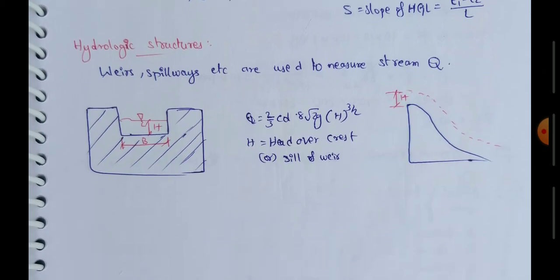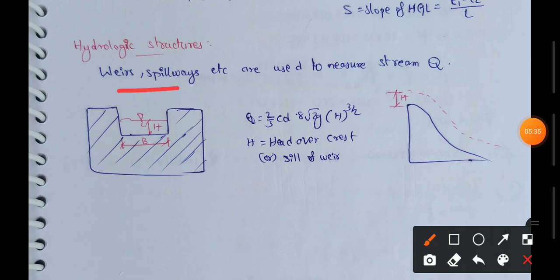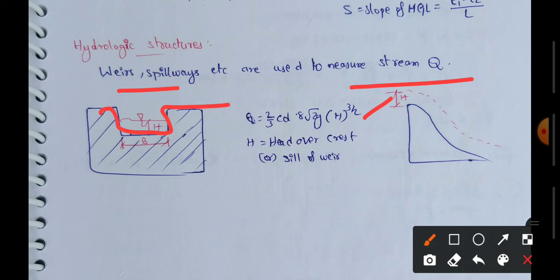Hydraulic structures — such as spillways, weirs, and flumes — are used to find stream discharge and velocity. Discharge Q equals (2/3) × Cd × √(2g) × H^(3/2), where H is the head over the crest and Cd is the coefficient of discharge. Different shapes — triangular, trapezoidal, rectangular — each have their own formula.